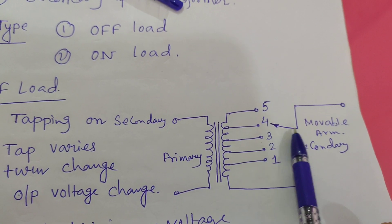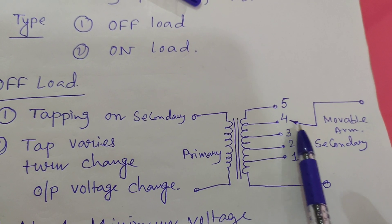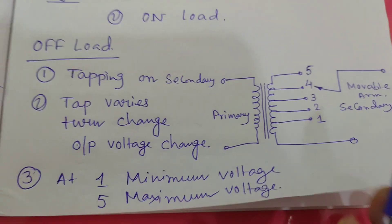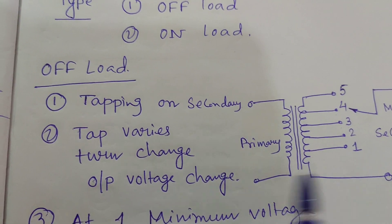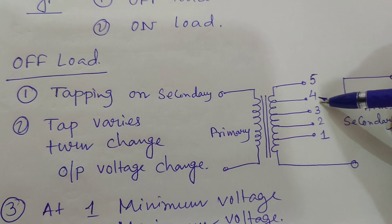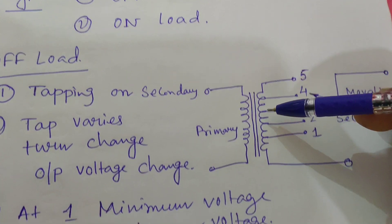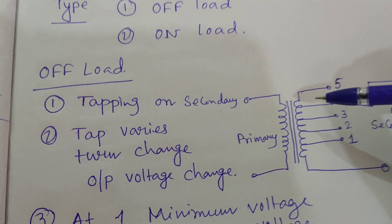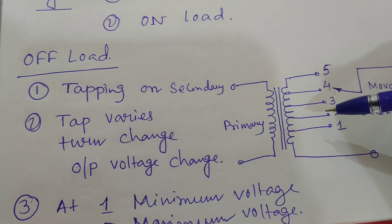The movable arm is connected with the secondary terminals and is changed according to the required voltage. Tapping on the secondary is the fundamental principle: tap varies, turn varies. When we change the tap from 5 to 4, we are decreasing the tap, so the voltage decreases accordingly. When we increase the tap, the voltage increases — tap varies, turn changes, and output voltage changes.